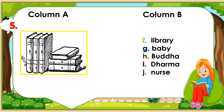Number 5: Look at this picture. What's this? Match this picture with a correct word in column B. F. Library. G. Baby. H. Buddha. I. Dharma. J. Nurse. Write the letter only.